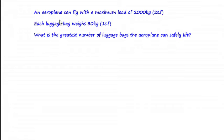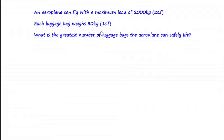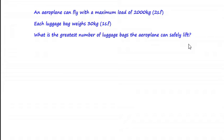An aeroplane could fly with a maximum load of 2,000 kg, measured to two significant figures. Each luggage bag weighs 30 kg, measured to one significant figure. What's the greatest number of luggage bags the aeroplane can safely lift?